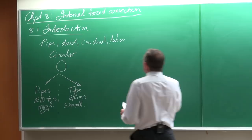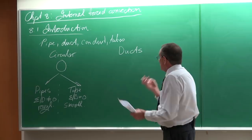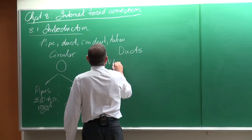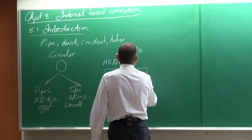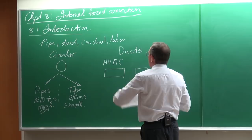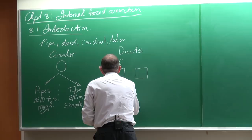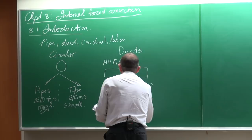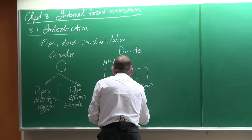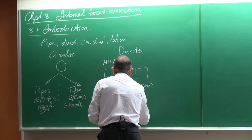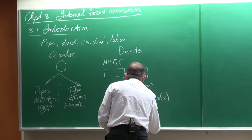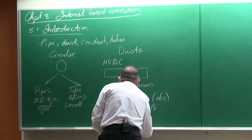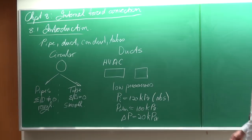Then there are ducts. Ducts are normally used in the HVAC industry — the heating, ventilation, and air conditioning industry. You might see them typically in a rectangular geometry or sometimes other shapes. They are used normally where we have low pressure. Typically, the inside pressure is about 120 kPa absolute, while atmospheric pressure is approximately 100 kPa, so the pressure difference between the inside and outside is at most approximately 20 kPa. Those are typically ducts: low pressure differences.